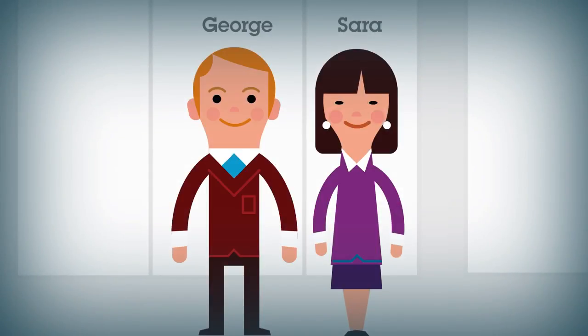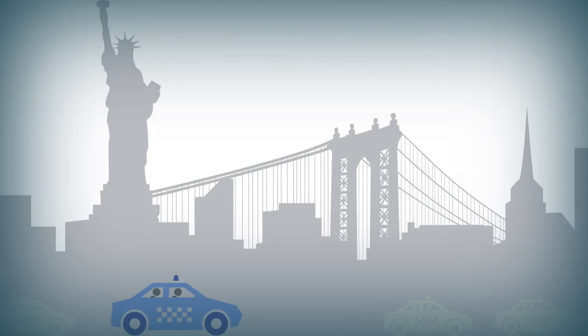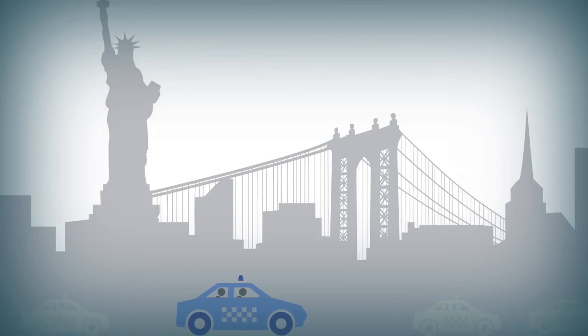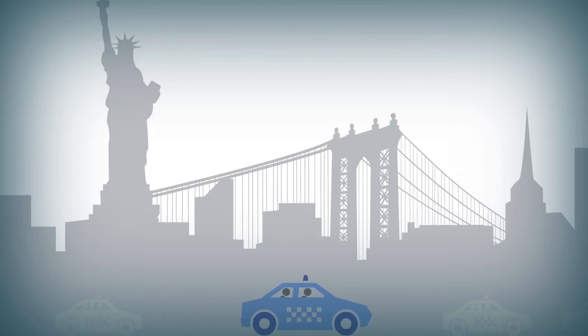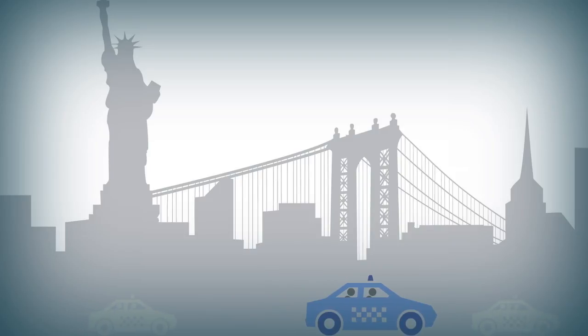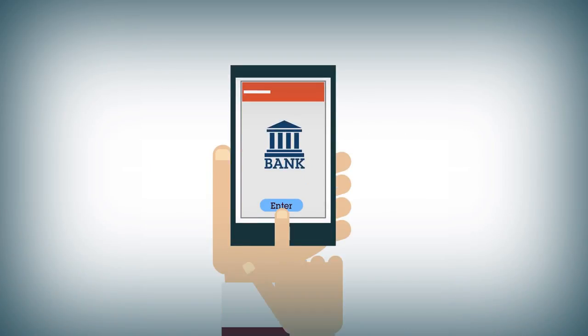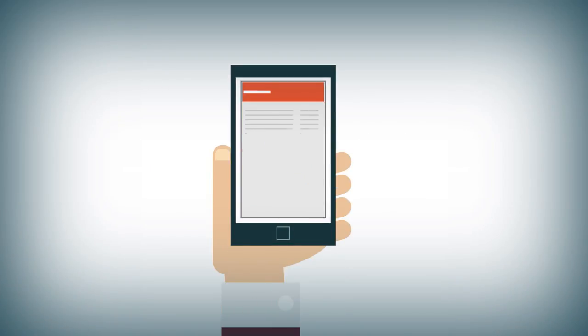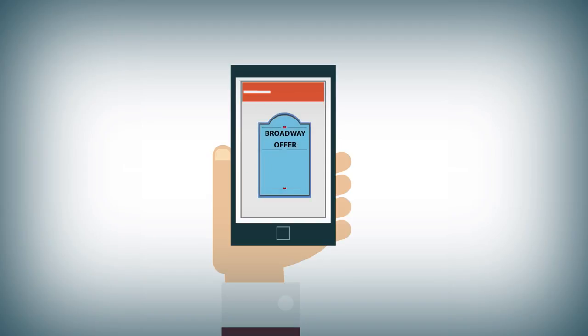George and Sarah Smith decided to spend the weekend in New York City. On the way to the hotel, George checks their account using the bank's mobile app. The app displays his balance and features an offer for a Broadway show.